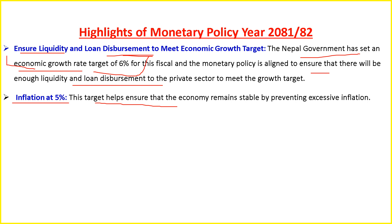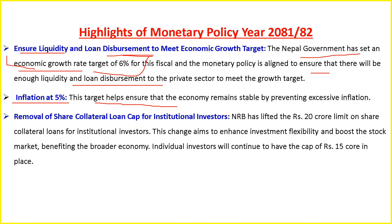Regarding removal of the share collateral cap for institutional investors, Nepal Rastra Bank has lifted the 20 crore limit on share collateral loans for institutional investors. This change aims to enhance investment flexibility and boost the stock market, benefiting the broader economy. Individual investors will continue to have the cap of 15 crore in place.